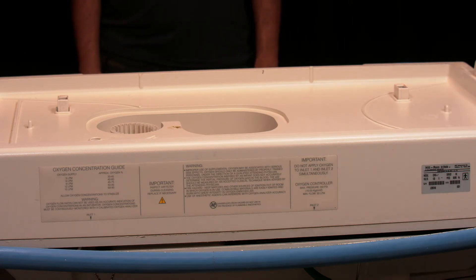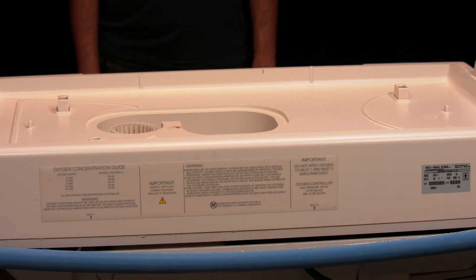There are four screws on the bottom of the infant incubator that you have to unscrew to open up the casing. Once you remove the screws, you can take off the blue seal on the sides.